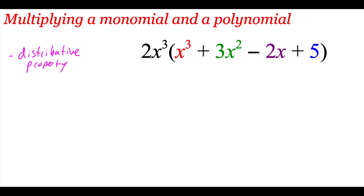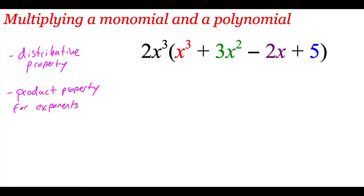So we're going to be taking this 2x cubed and multiplying it into this set of parentheses, multiplying everything inside by that 2x cubed. Now one thing we're going to have to remember is our product property for exponents. Remember what the product property says is if you're multiplying two of the same variable together, you want to add those exponents together. So let's start doing this multiplication.